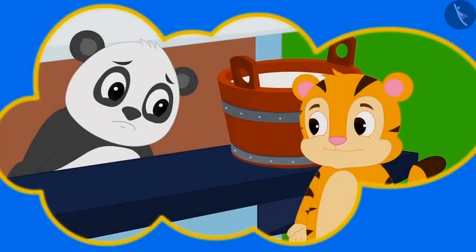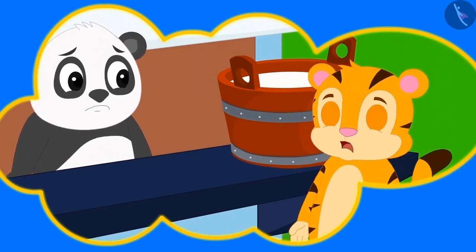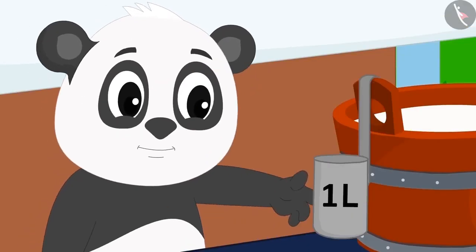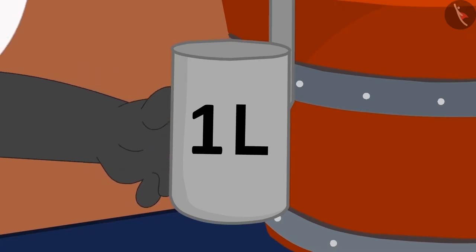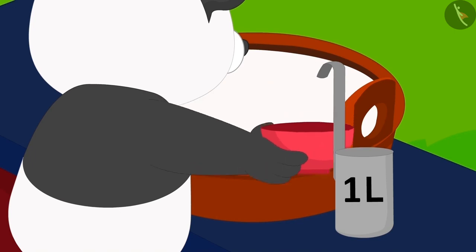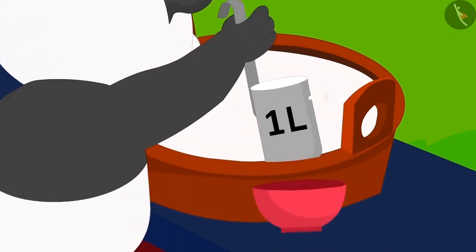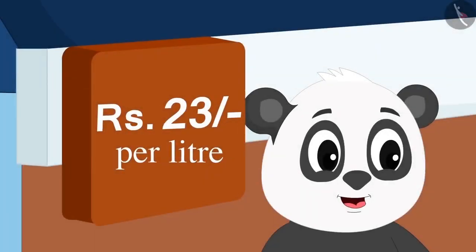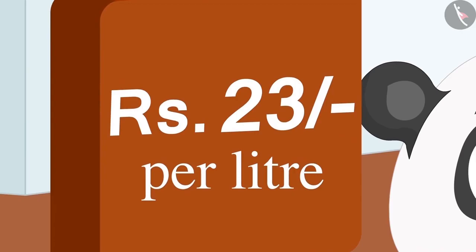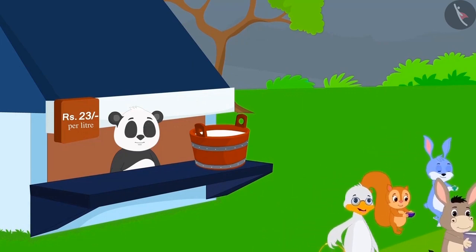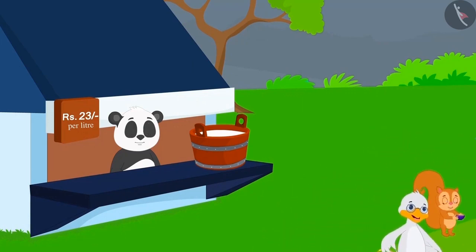When Sherekh Khan explained this to Golu, he immediately brought a liter measuring scale, like this one from the market. Now, Golu started selling milk using this measuring scale, and took money from everybody according to the amount of milk per liter. Golu sold milk to all the villagers and everyone happily went back to their respective homes.